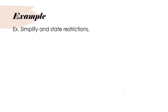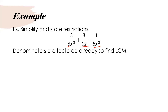Let's do an example. Everything here is factored out as monomials, so I don't have to factor. I first want to figure out my lowest common multiple. Starting with the numbers: what is the lowest common multiple for the coefficients 8, 4, and 6? I notice it would be 24.